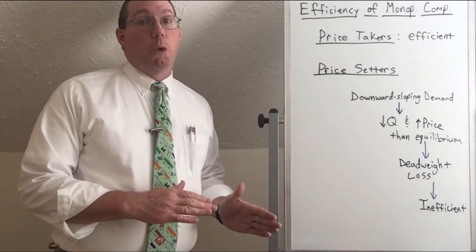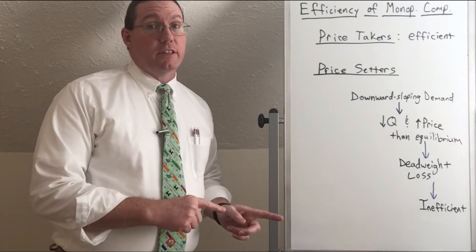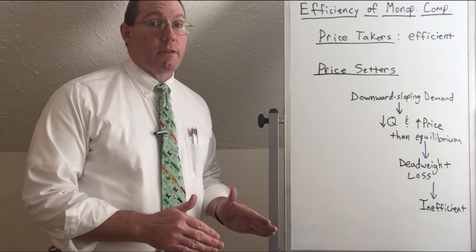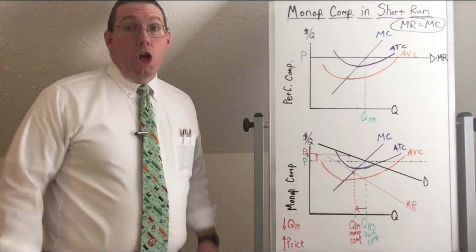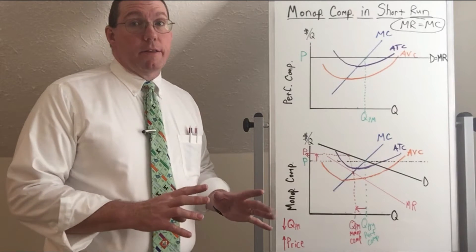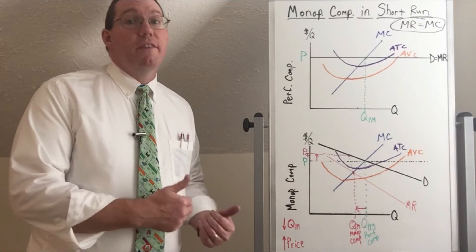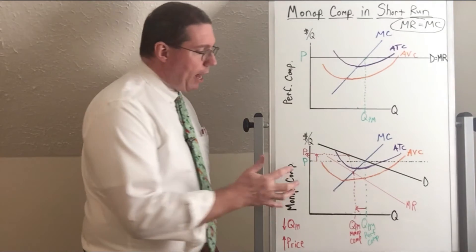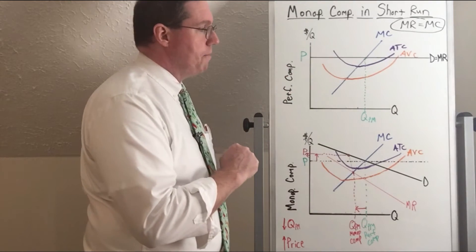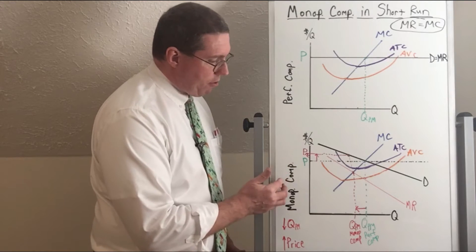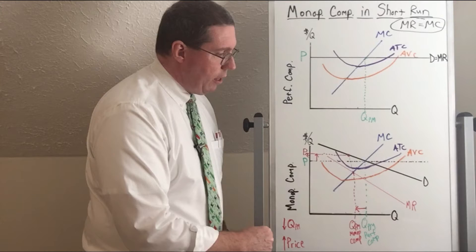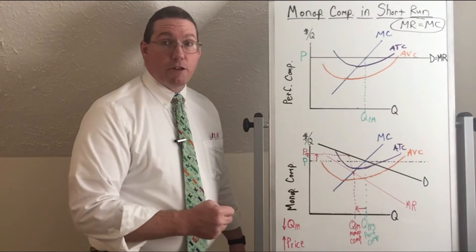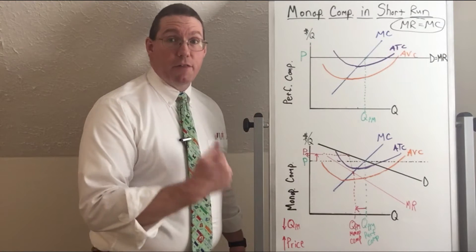Now what we're going to do is look back at our comparison between perfect competition and monopolistic competition, and we're going to see that there is indeed a dead weight loss in the monopolistic competition market structure. Going back to the previous segment when we talked about monopolistic competition in the short run, we compared monopolistic competition to perfect competition. Because monopolistic competition has a downward sloping demand curve, they are price setters — they can charge a higher price and produce a smaller quantity that is better for them in earning profits.